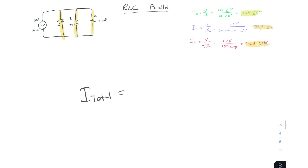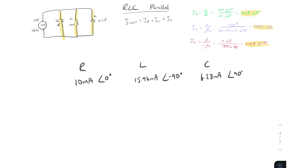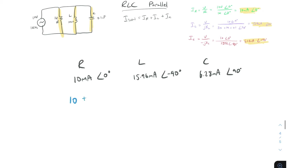The total current I_total equals IR plus IL plus IC. We need to add these complex numbers together, and since we're adding, we want them in rectangular form because adding in polar form is messy. Let's convert all three polar forms into rectangular form. For 10 milliamps at zero degrees, the magnitude is 10 with no phase shift, so the j complex portion is zero.